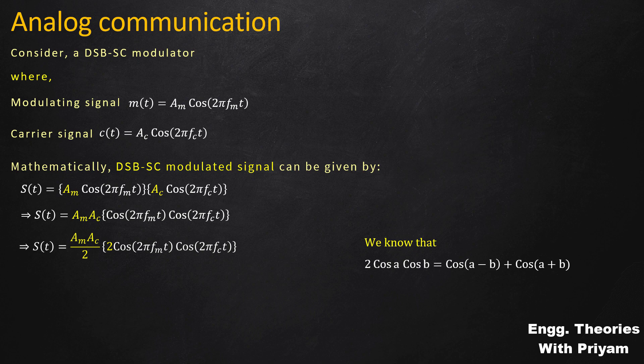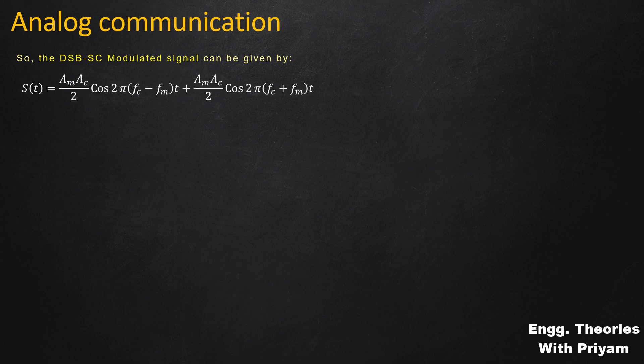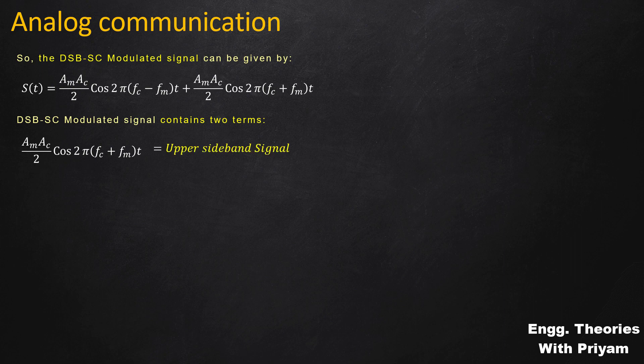Using the product-to-sum formula 2·cos(A)·cos(B) = cos(A−B) + cos(A+B), the DSBSC signal becomes s(t) = (Am·Ac/2)·cos(2π·fc·t − 2π·fm·t) + (Am·Ac/2)·cos(2π·fc·t + 2π·fm·t). This equation contains two terms: the first term, (Am·Ac/2)·cos(2π(fc+fm)t), is the upper sideband signal, and the second term, (Am·Ac/2)·cos(2π(fc−fm)t), is the lower sideband signal.